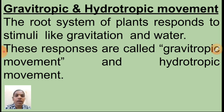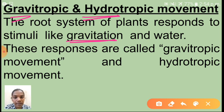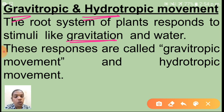Next one is gravitropic or hydrotropic movement. Gravi means gravitational force and hydro means water. The root system of plants responds to stimuli like gravitation and water — the root grows under the earth, towards the gravitational force and water. These responses are called gravitropic movement and hydrotropic movement respectively.